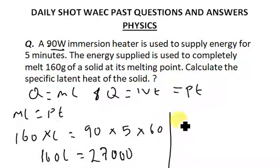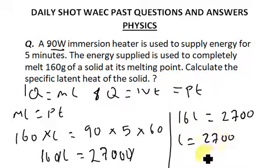Let's cancel zeros out of this—that means we're going to have 16L equals 2,700. So L equals 2,700 over 16. If you punch in your calculator, your calculator is going to give you approximately 169.